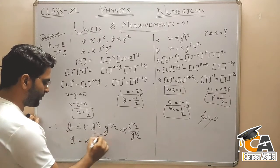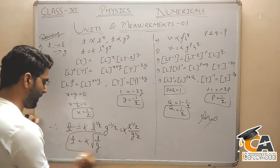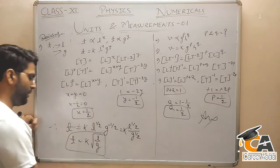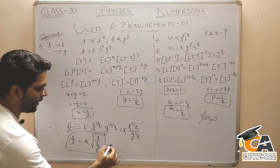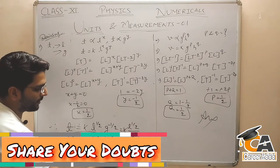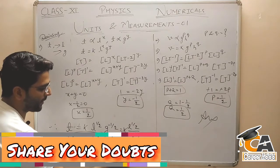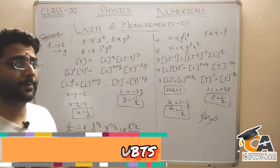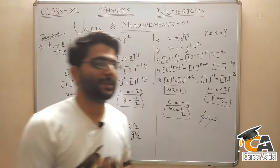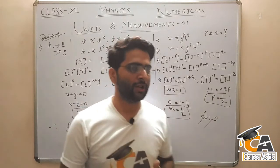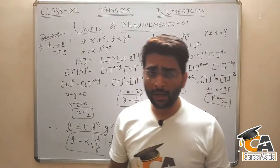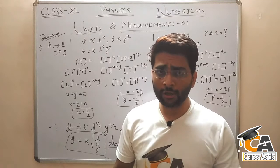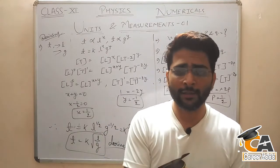1 by 2 को root लिखते हैं तो root over L by G — यह आपका time period of pendulum का formula है जो derive हो गया। Clear है बच्चों, hope है अब सारे questions आप से बन जाएंगे, confidence आ चुका है।